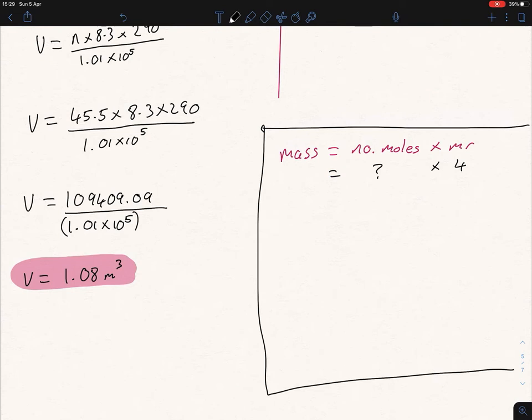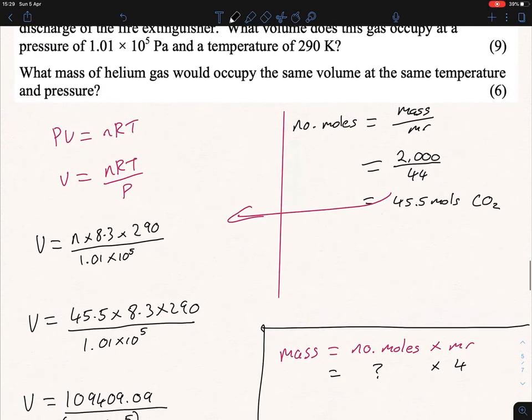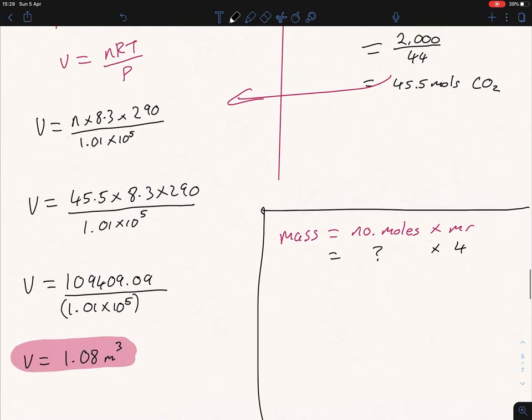Now we have to figure out what is our number of moles. You're told in the question that it's the same volume at the same temperature. So if it's the same volume and same temperature we can assume the moles are going to be the same. All I'm going to do here is put in my number of moles, that's going to be my 45.5, so 45.5 times 4.